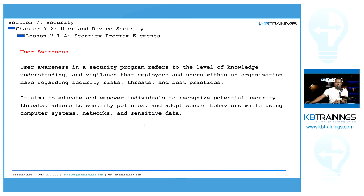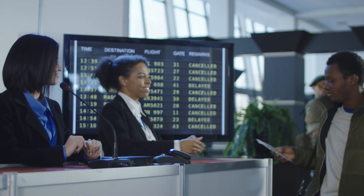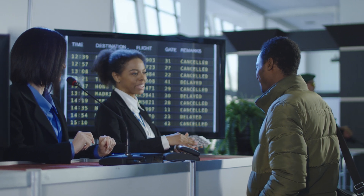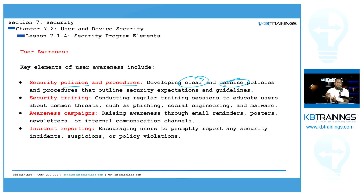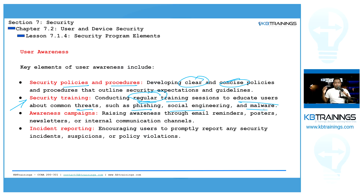To accomplish user awareness, you can use different measures including security policies and procedures. You need to have strong, clear, and concise policies that everybody can understand and apply in their day-to-day work. You also need to do security training — your users need regular training sessions to educate them about common threats such as phishing, social engineering, and malware. If users are not aware, they may click on links in emails and introduce malware or other vulnerabilities into your system.